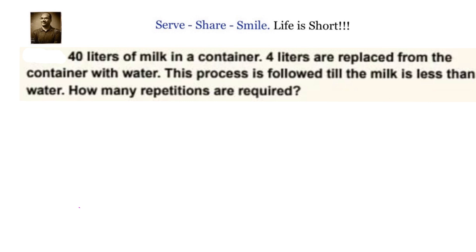We have to understand what is the meaning of till the milk is less than water. Suppose I have 40 liters and I go on adding water. Let's say I have milk quantity here and water quantity here. When they both are equal to 20, 20, they are equal. When milk becomes less than 20, then automatically water will become more than 20 because they should add up to 40. So our scenario now is that the final quantity of milk should be less than 20.